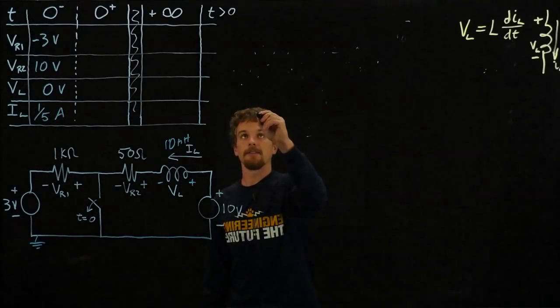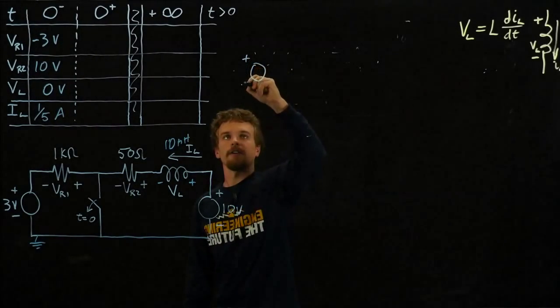The switch opens at T equals zero, which breaks this connection in the middle, and all of a sudden we have everything around a loop.